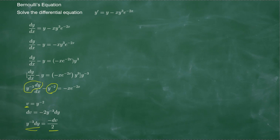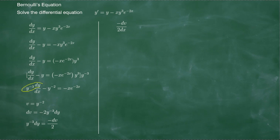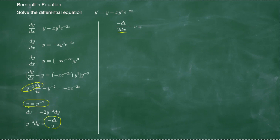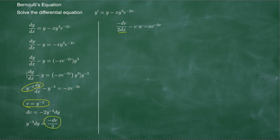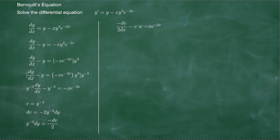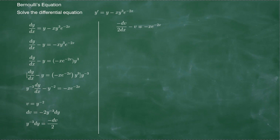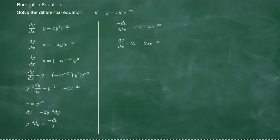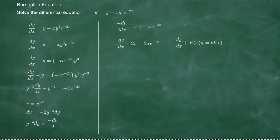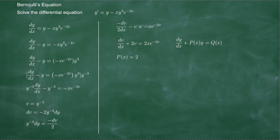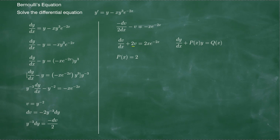We now have negative dv over 2 dx minus v equals negative x times e to the negative 2x. Multiplying the whole equation by negative 1 gives us a first order linear differential equation in v. From this we identify p(x) equals 2 and q(x) equals 2x times e to the negative 2x.